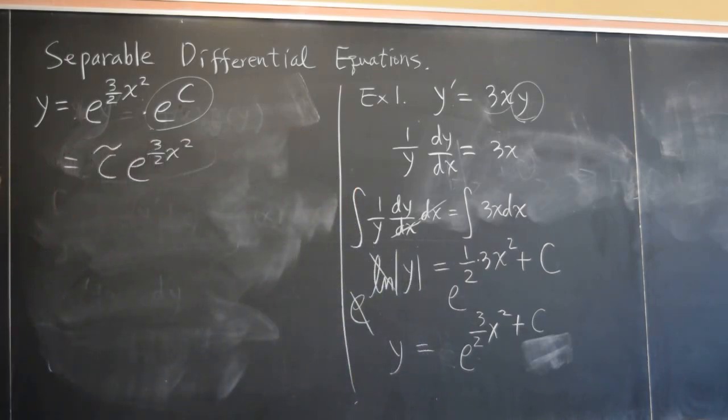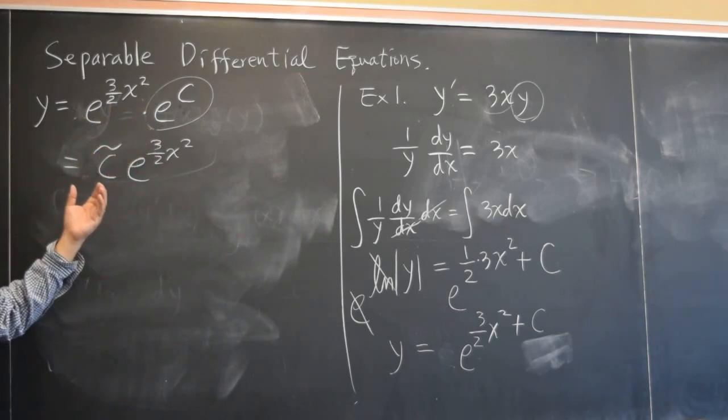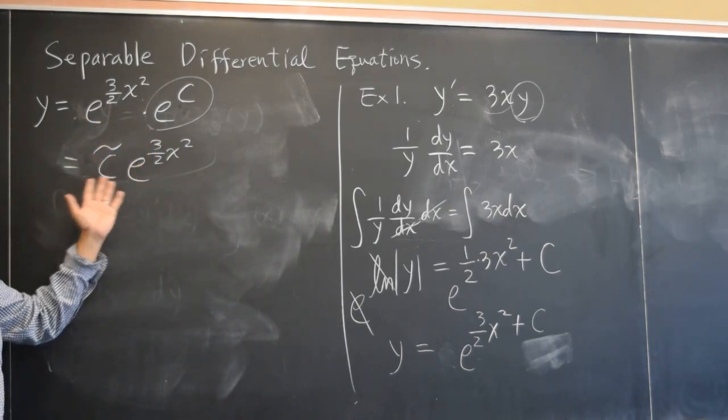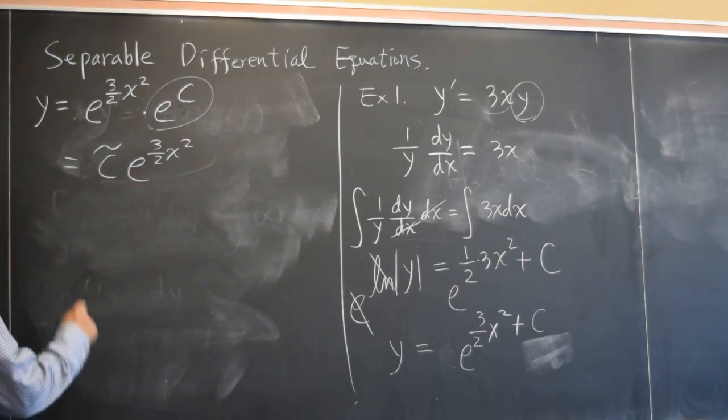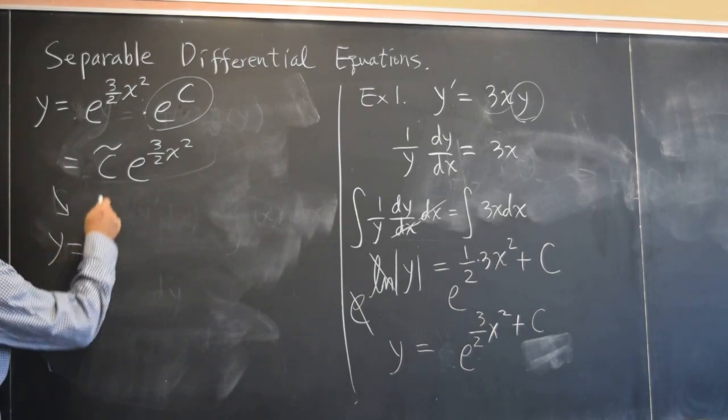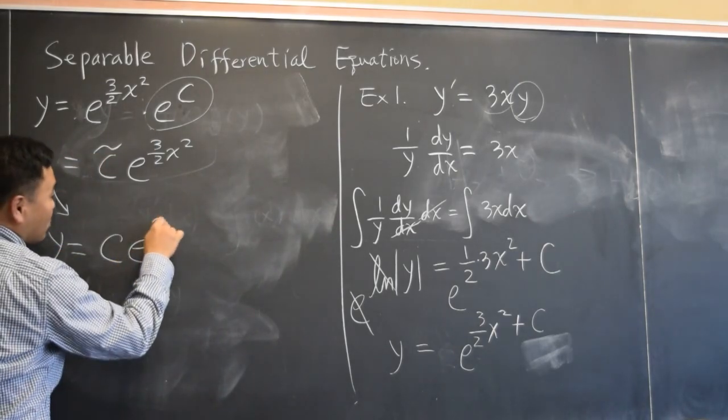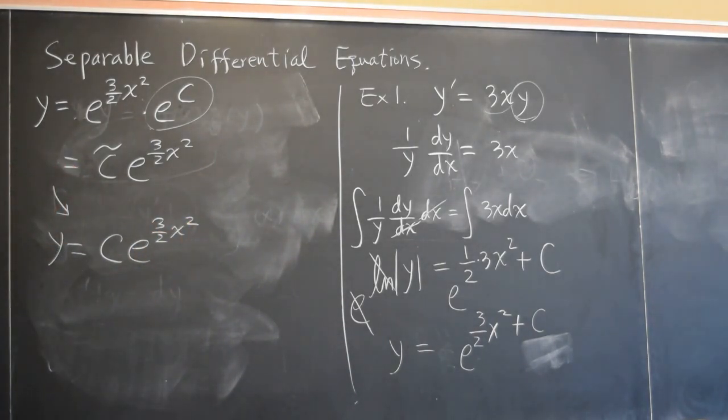And we'll be doing this many, many times. And at some point, you're going to understand this process of just redefining our free parameters so that the final answer looks simpler. So when we write down the final answer, we'll often just get rid of this tilde and say it's just some constant times e to 3 over 2 x squared.